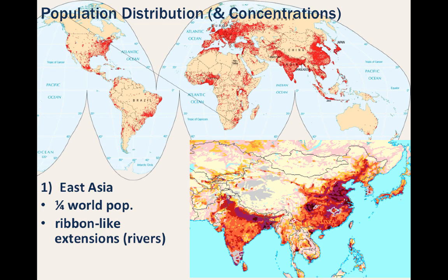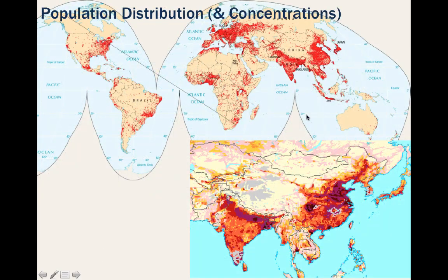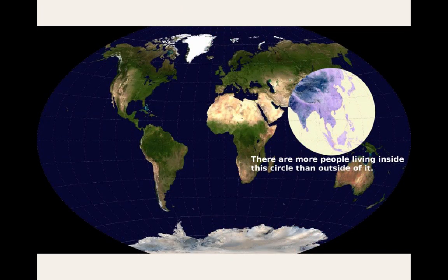If you need a reminder, see the high agricultural density in China? The second largest concentration of people is in South Asia, anchored by India, Pakistan, Bangladesh, and Sri Lanka. You can see particularly high concentrations up against physical barriers such as the Himalayas to the northeast and the Thar Desert in the northwestern region of India next to Pakistan. And here's a remarkable map showing just how populous these regions are — there are more people living inside the circle than outside of it.